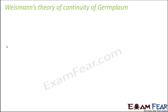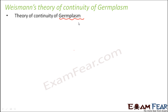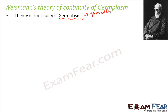Weismann's theory of continuity of germplasm — this theory is also known as the theory of continuity of germplasm. Germplasm refers to the protoplasm of germ cells. Germ cells are one of two categories of cells: somatic cells, which are the body cells, and germ cells, which are the sex cells that participate in the process of reproduction. The protoplasm of the germ cells is called germplasm, and this theory was given by Weismann.